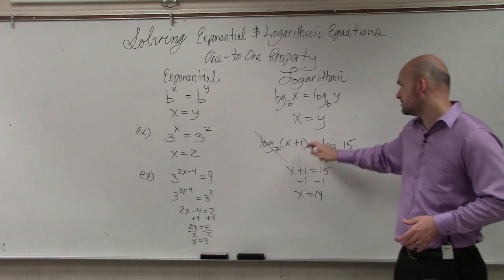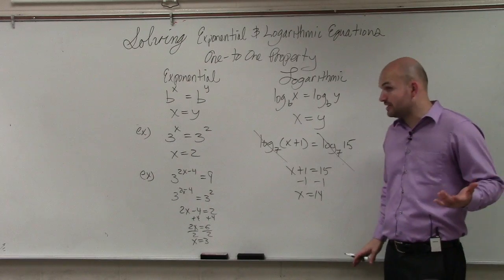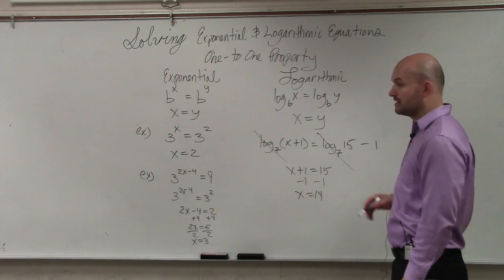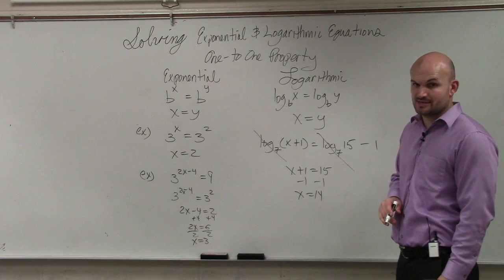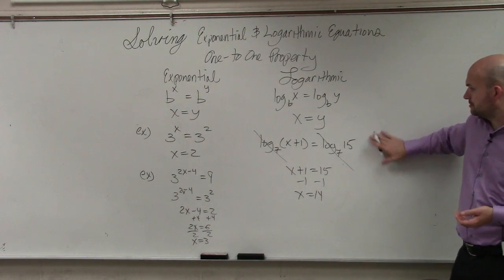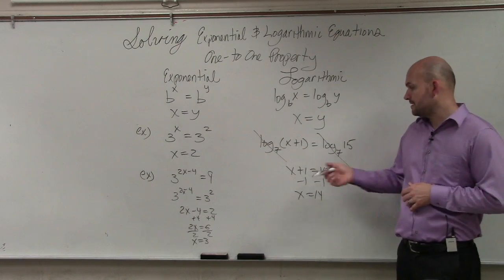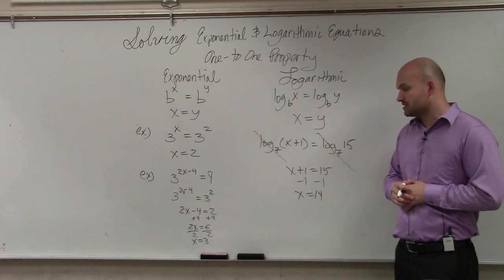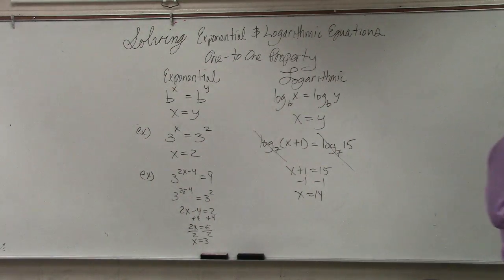So as long as the logs are equal to one another, that doesn't work when there's like a number outside of there. You can't do it that time. It has to be one log equal to another log. Okay? And then you can set them equal to each other as long as they have the same base. And that's basically the one-to-one property.